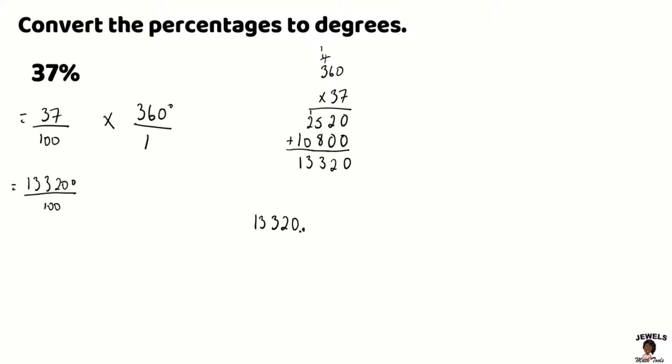we're going to divide by moving our decimal point two places to the left. So that will be 1, 2, and my decimal point will now be between my 3 and my 2, making my number 133.20. So my number 37% in degrees will be equal to 133.2 degrees.